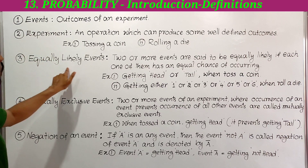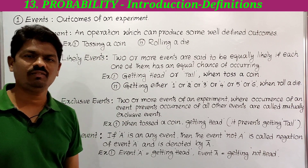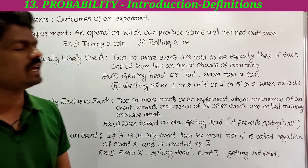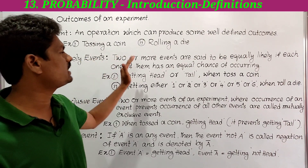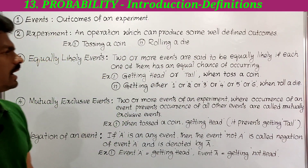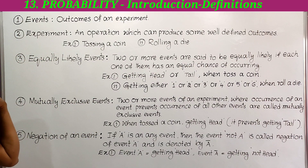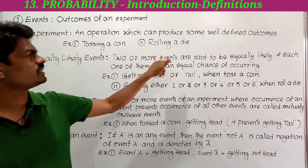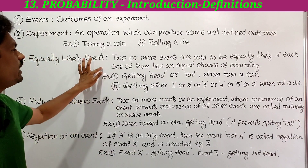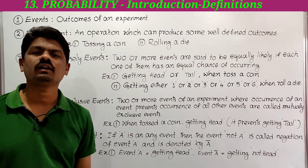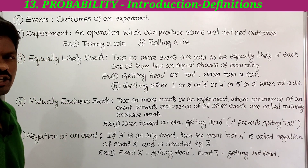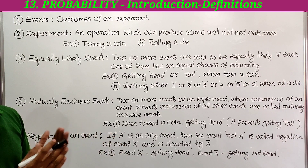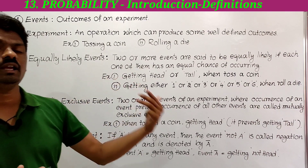Next, equally likely events. Two or more events are said to be equally likely if each one of them has an equal chance of occurring. So two or more events of an experiment each have an equal chance of occurring — those are called equally likely events.